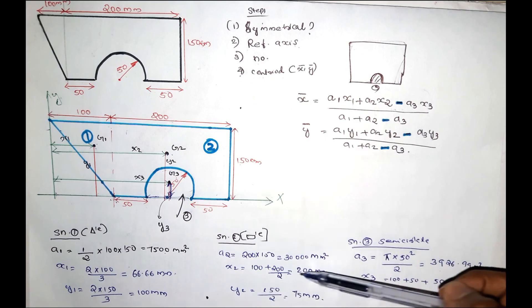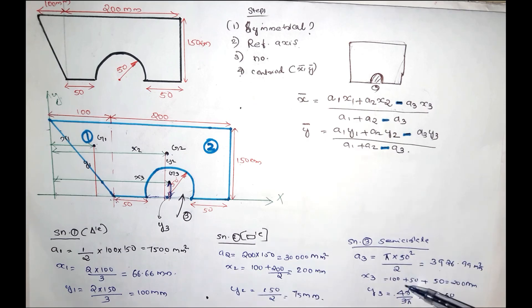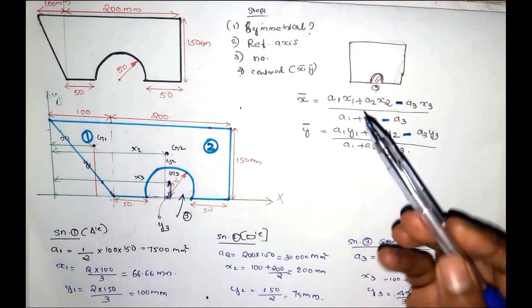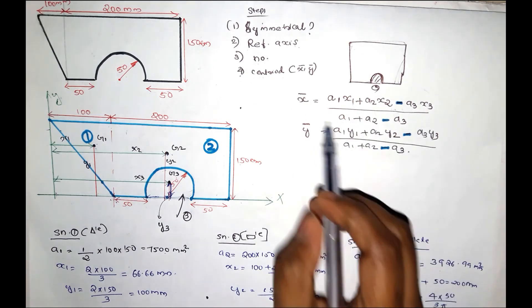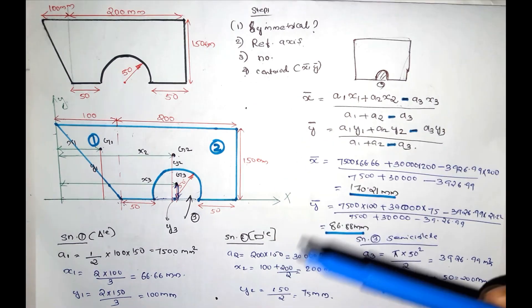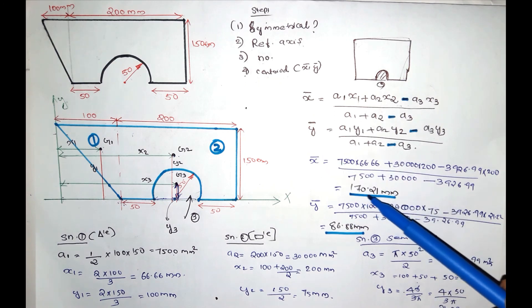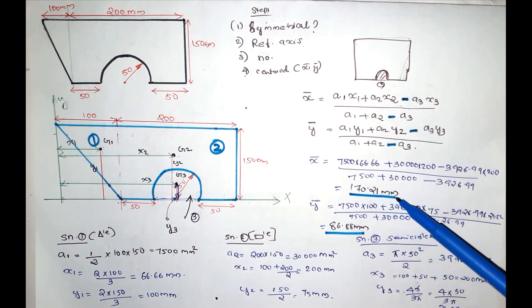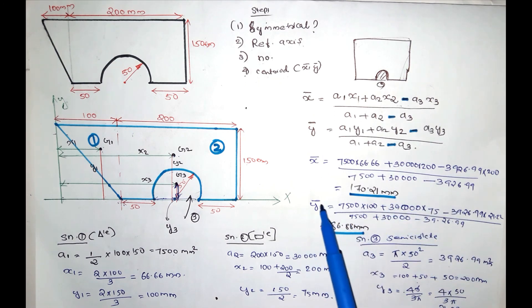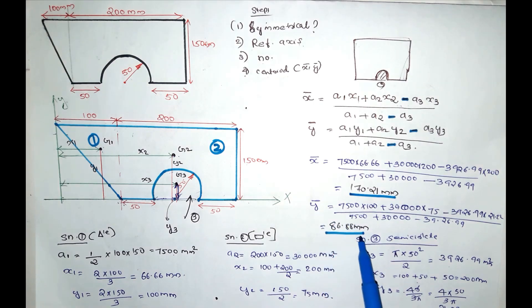Now we have all unknowns. We substitute into the centroid equations. The answer is: x̄ = 170.21 mm and ȳ = 86.88 mm.